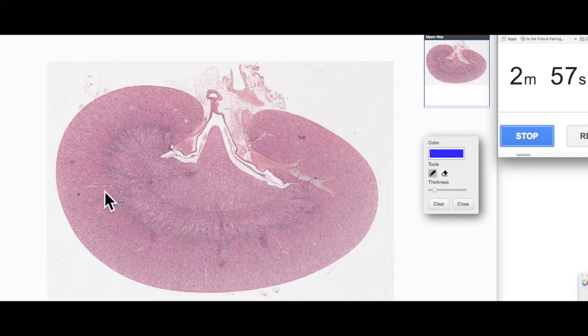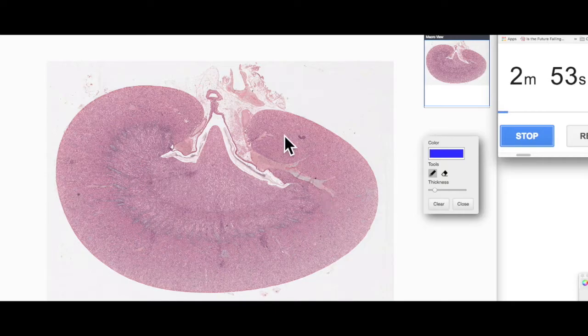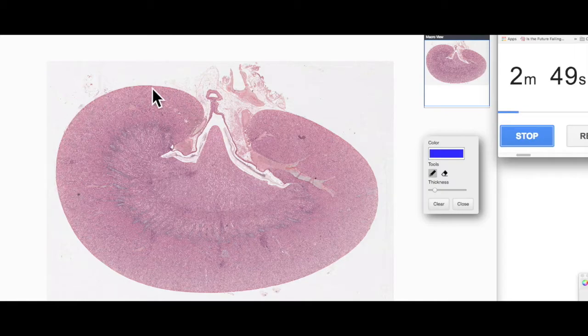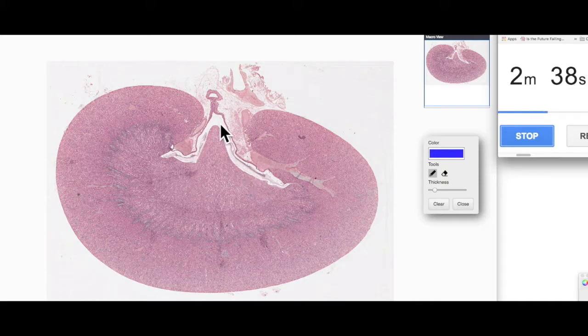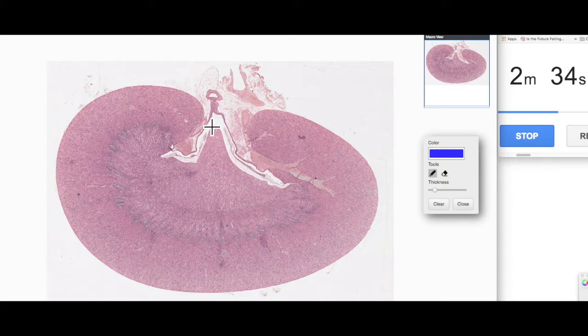You can see at this low magnification that the kidney is, well, kidney shaped. On the outside is a dense irregular connective tissue capsule, the renal capsule. The kidney's divided into two regions: an outer cortex, which is this tissue out here, and an inner medullary region. You can see the medulla ends in this peak, referred to as the renal pyramid, because it looks like a triangle.